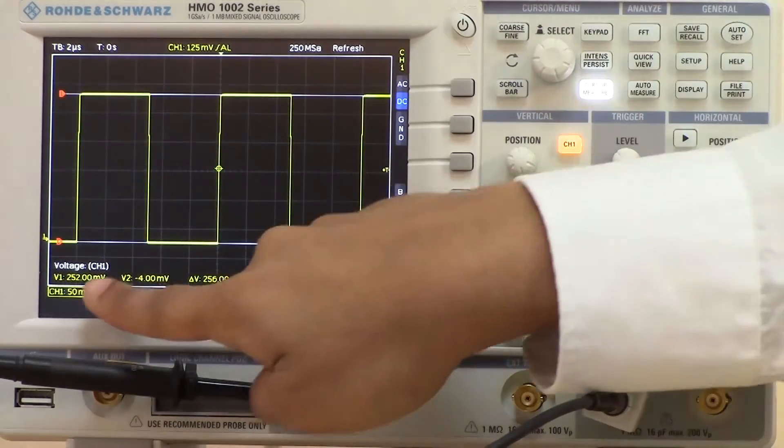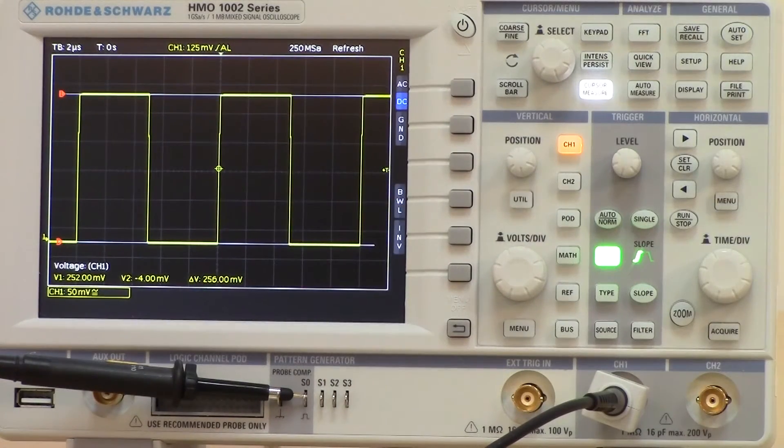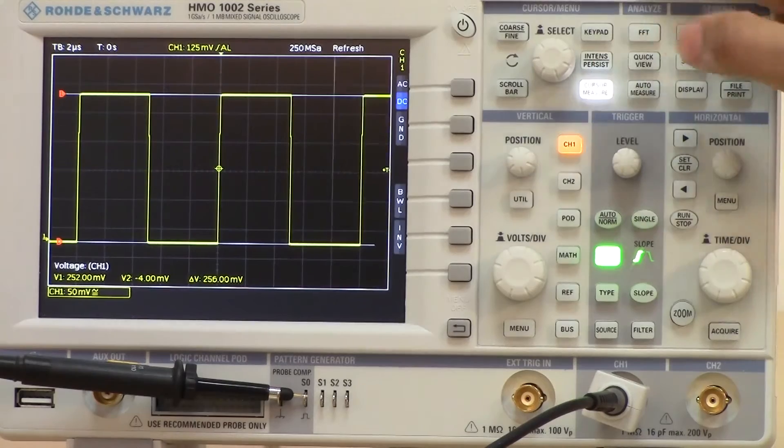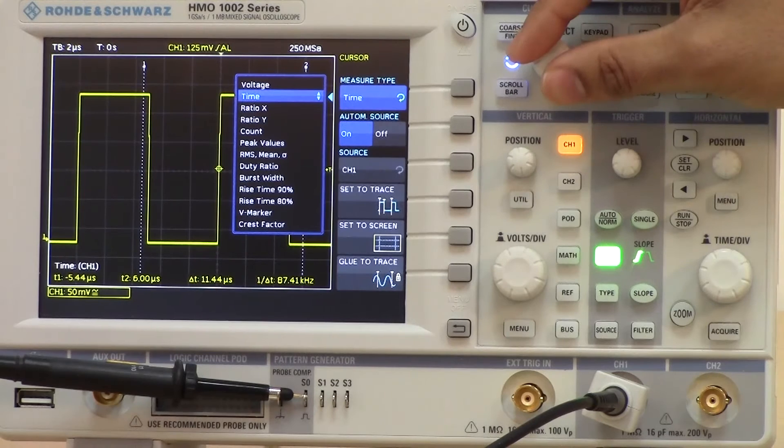You should be able to see V1, V2, and the delta of the voltage between them. If I go back into the cursor menu, I can then again choose, for example, time, and this can be changed again.